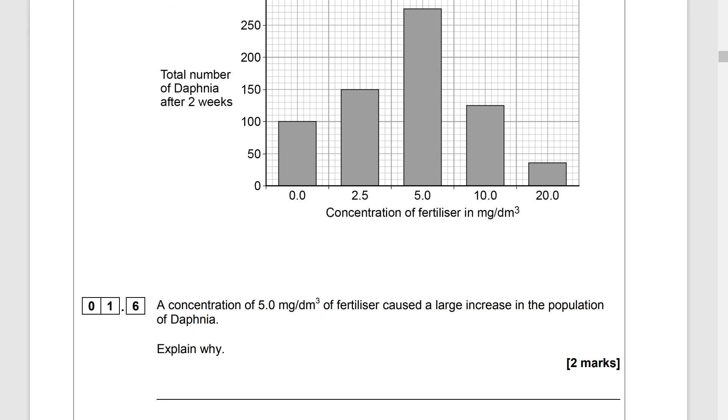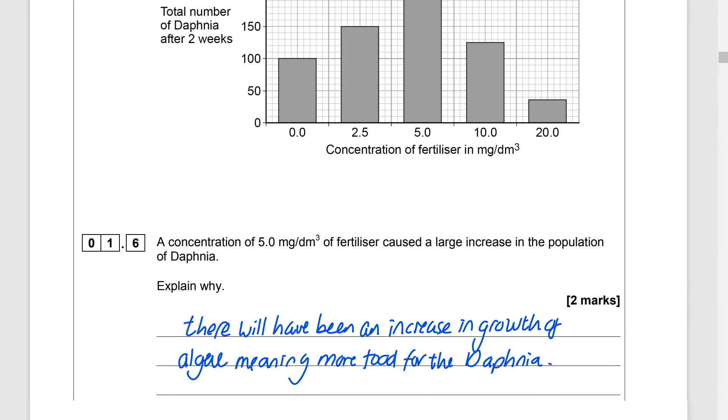Well this links back to eutrophication and the fact that actually you know what Daphnia they feed on algae and if you remember when fertiliser goes into water the algae multiply and then they can cause problems can't they but the Daphnia love to eat it. So it would make sense that if there is an increase in the growth of algae that would mean more food for the Daphnia and that's why the numbers are going to go up.